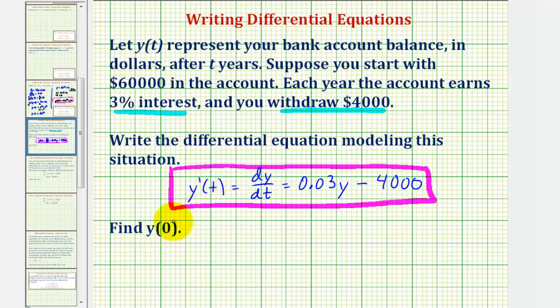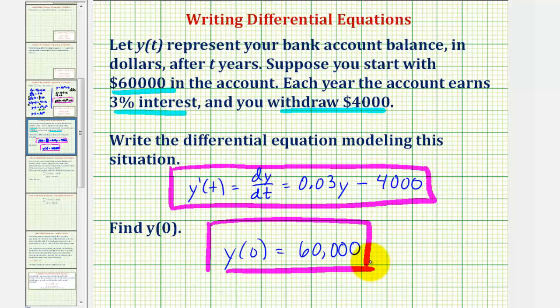We're also asked to find y(0). Notice this is y(0), not y'(0). The function y gives us the account balance, so y(0) represents the starting account balance, which we're told is $60,000. Therefore, y(0) equals $60,000. I hope you found this helpful.